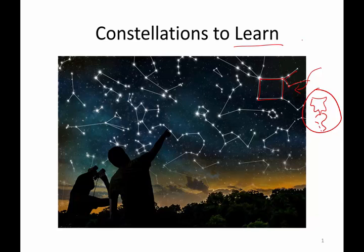We are going to concentrate in this course just on the constellations in the northern hemisphere. If you go to Australia or Africa, you're kind of on your own — you're going to have to learn your constellations all by yourself before you get there. So we are going to concentrate on the ones that we can see from our mid-latitudes, about 45 degrees above the equator.